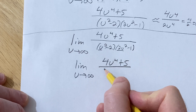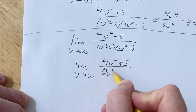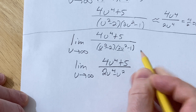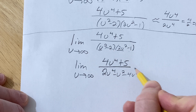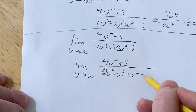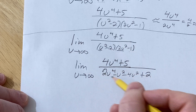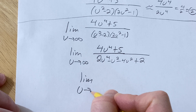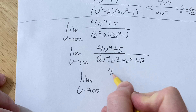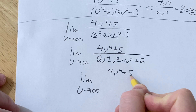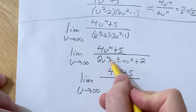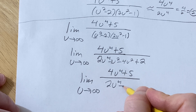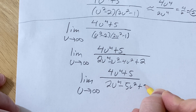Multiplying out the denominator: u squared times 2u squared is 2u to the 4th; u squared times negative 1 is minus u squared; negative 2 times 2u squared is minus 4u squared; and negative 2 times negative 1 is plus 2. Combining like terms, the denominator becomes 2u to the 4th minus 5u squared plus 2.